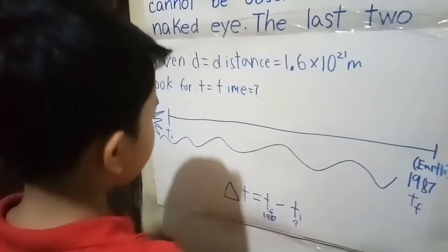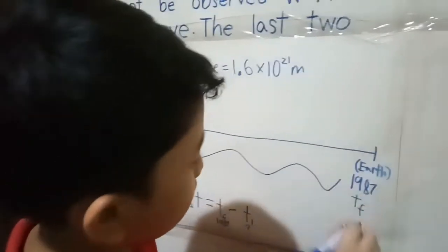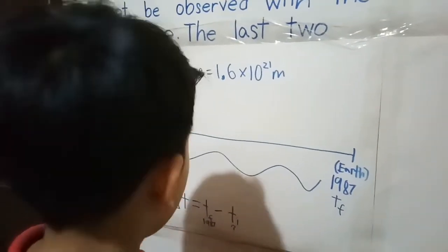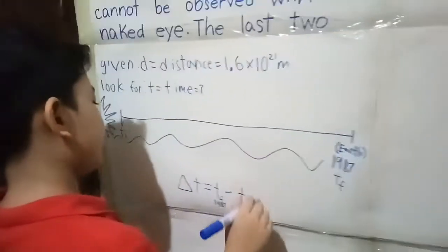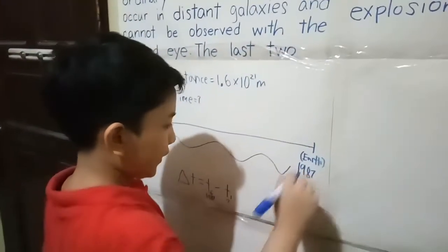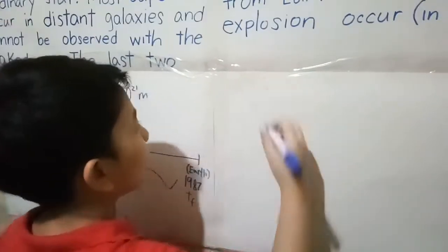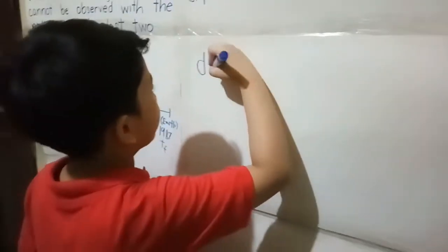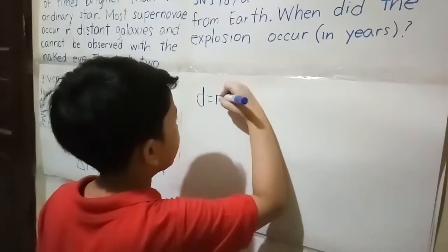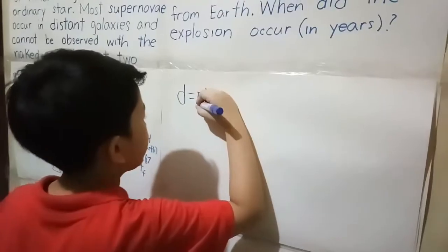Instead, we are using light, the light from the supernova that reached Earth in 1987. Not just any kind of light, but the speed of light. Let's begin! First, we are going to use the equation distance equals rate times time.